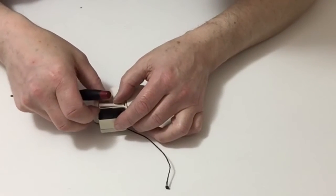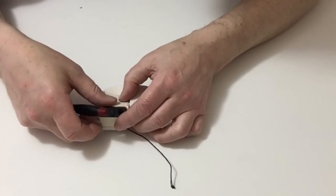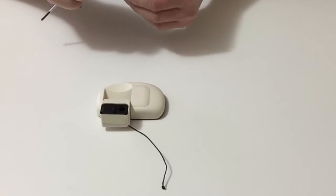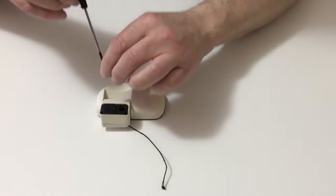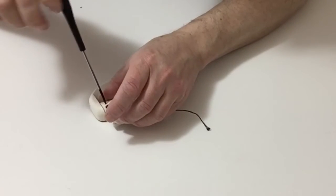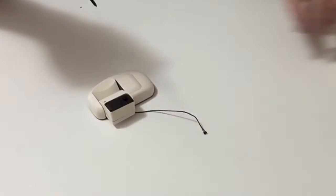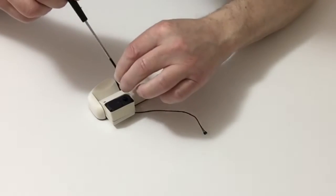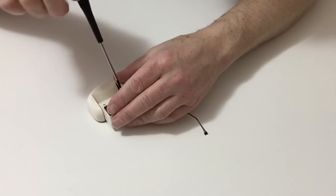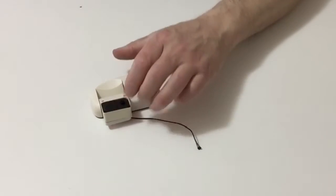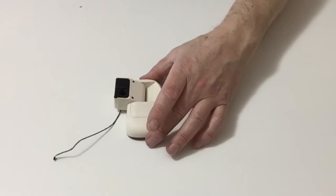Don't over tighten them but make sure that they're flush with the bottom. Then take the left ankle panel, placing that over Robbie's ankle like so, and then take two more of the countersunk screws and screw that down. There we have Robbie's left foot assembled.